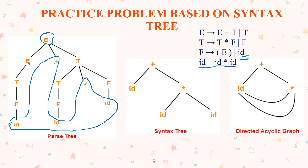This is a directed acyclic graph (DAG). Here we take ID plus ID multiplied by ID. The plus symbol connects ID plus ID, and then ID is multiplied by ID. Since the same ID appears multiple times, it is shared in the DAG. This is the directed acyclic graph representation of the grammar.